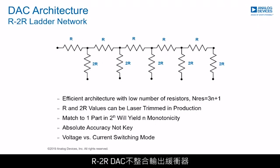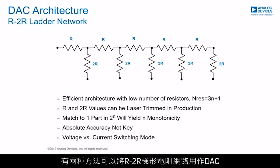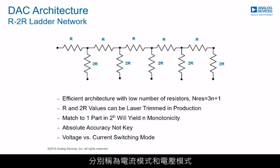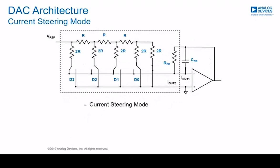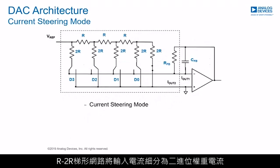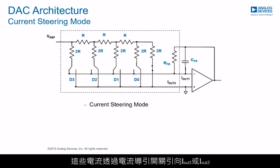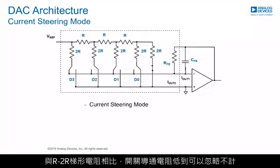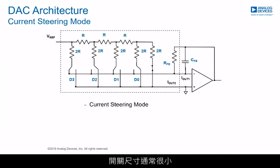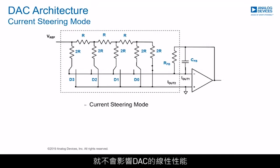R-2R DACs do not integrate output buffers, giving the possibility to customize the DAC performance depending on the required distortion and desired precision. There are two ways in which the R-2R ladder network may be used as a DAC, known as current mode and voltage mode. In a current steering DAC, the R-2R ladder divides the input current into binary weighted currents, and these currents are steered to IOT1 or IOT2 by current steering switches. Switch on-resistance is low enough to be negligible compared with the R-2R ladder resistors, and switch sizes are generally scaled to ensure each switch has the same voltage drop across it.